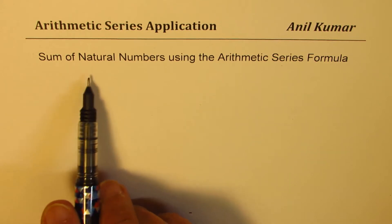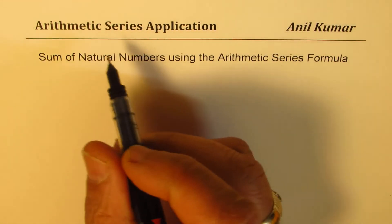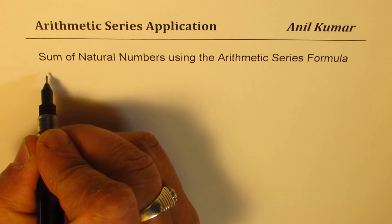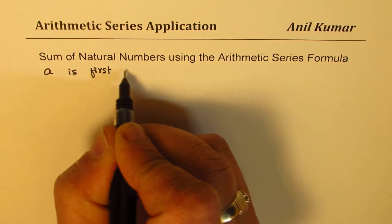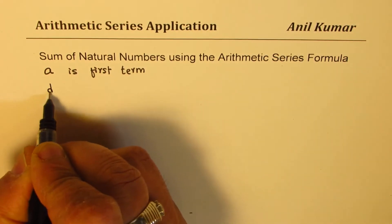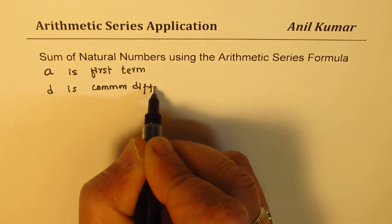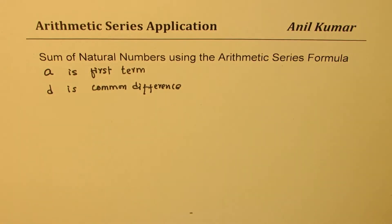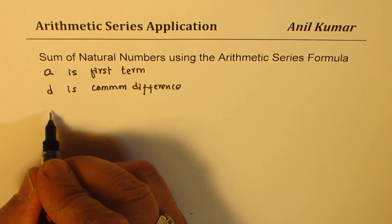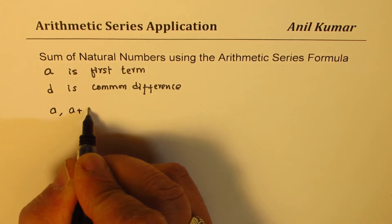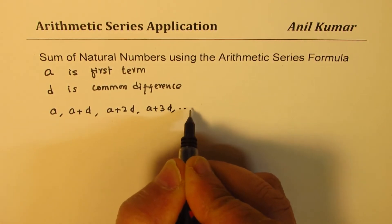We need to find sum of natural numbers using the arithmetic series formula. What we learned in arithmetic sequences and series is that if A is the first term and D is the common difference, then the arithmetic sequence will be A, A plus D, A plus 2D, A plus 3D, and so on.